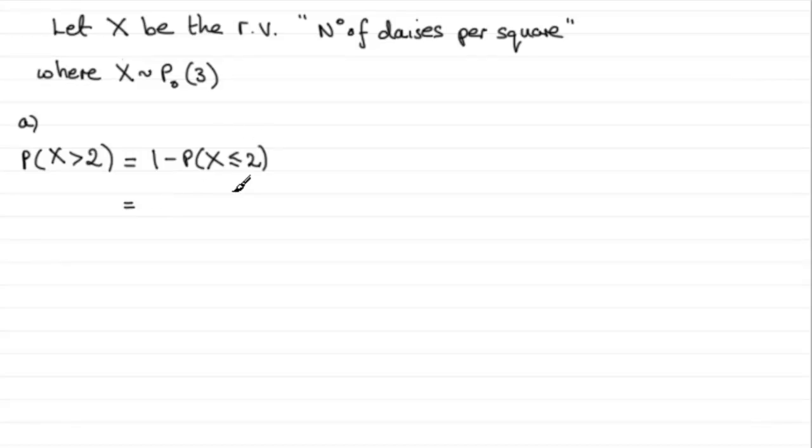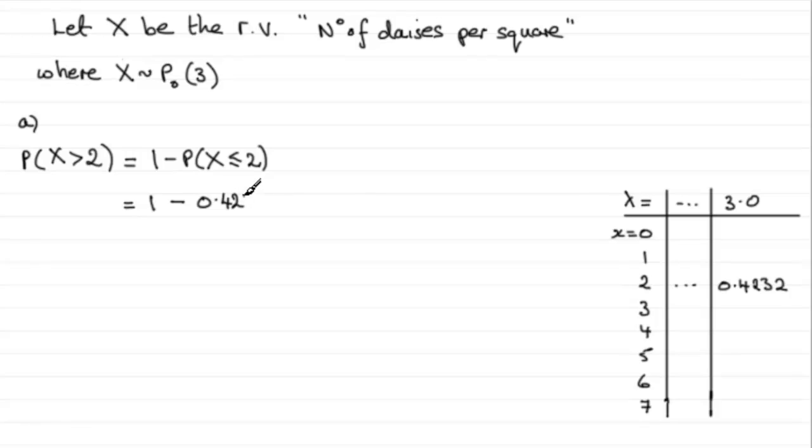We can use the cumulative Poisson distribution tables. And if you did, they'd look something like this. And you'd look under the mean of lambda being 3, and look down to 2 where X is 2. And this gives us the probability of being less than or equal to 2. So that would be 1 minus 0.4232. And if you work that out, you end up with 0.5768.